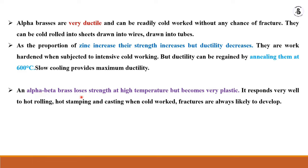Alpha-beta brass loses strength at high temperature but becomes very plastic. Each material has a tendency to change its characteristics at temperature. It responds very well to hot rolling, hot stamping and casting. Cold working can cause fractures. So in case of the working process, it is easy to convert raw material into finished product using hot working, but if you cold work the material to convert it to desired size, such problems may be faced.